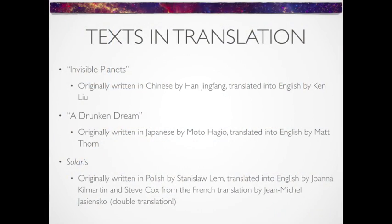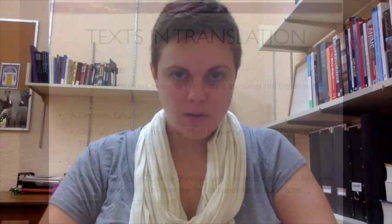In this course, we've got three main texts in translation: Invisible Planets by Hong Jingfang, which was originally written in Chinese; A Drunken Dream, which was originally written in Japanese by Motohagyo; and finally, the novel we'll be reading shortly, Stanisław Lem's Solaris, which was originally written in Polish. There are many reasons we feel it's important to examine literature from a variety of cultural and linguistic backgrounds. Two of the most important are to foster linguistic and cultural diversity, and to engage in an increasingly global scope in our understanding of literature.